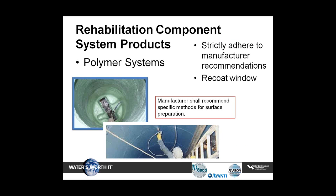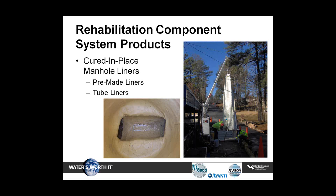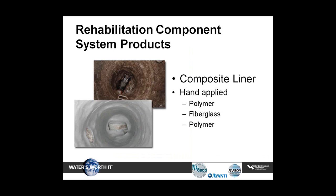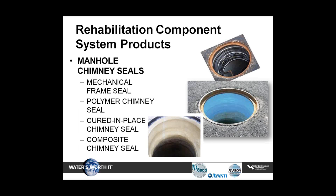For polymer systems, strict adherence to the manufacturer's installation procedures shall be followed. Products may be troweled, sprayed, or spin cast, and manufacturers shall determine the recoat window. Cured-in-place liners can either be pre-made liners or tube liners. Pre-made liners are custom fabricated and can accommodate a variety of manhole shapes and sizes. The tube liner system includes a constant diameter tube that is stretched to fit a range of manhole sizes and lengths. Composite liners shall be a multi-layered composite comprised of layers of epoxy and fiberglass, handcrafted and constructed in place and cured at ambient temperatures, with fiberglass overlapped a minimum of three inches.